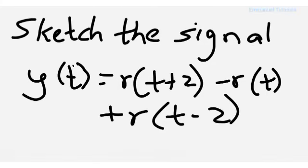Hello everyone, welcome back to Manual Tutorials. Today we will be seeing another example, a doubt asked by one of our students in the comment section. This is a sketch the signal example. The output is y(t) = r(t+2) - r(t) + r(t-2). This is what is to be sketched.